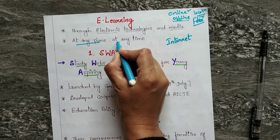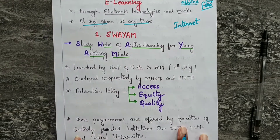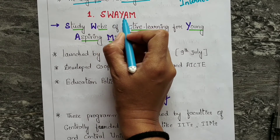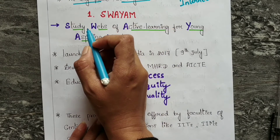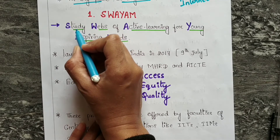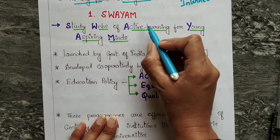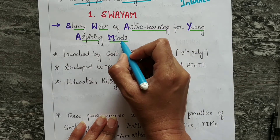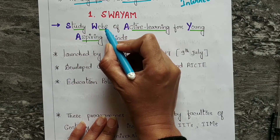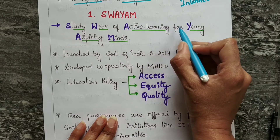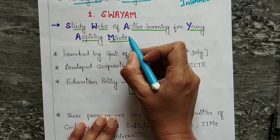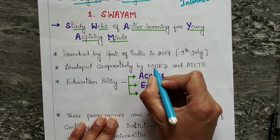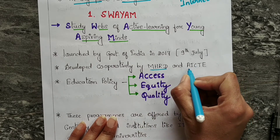The first platform is SWAYAM — S-W-A-Y-A-M. The full form is Study Webs of Active Learning for Young Aspiring Minds. This was launched by the Government of India and was developed by MHRD and AICTE.